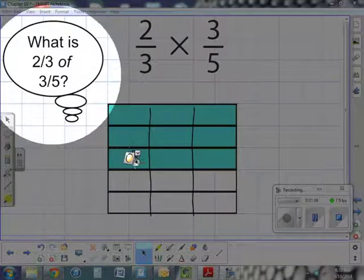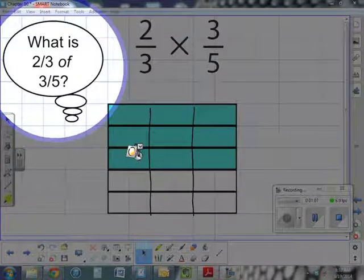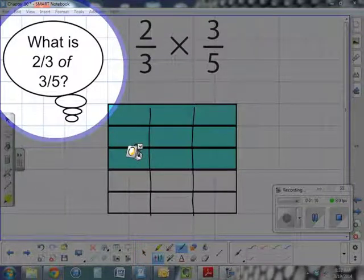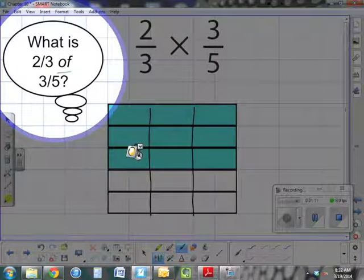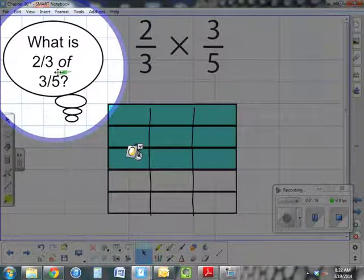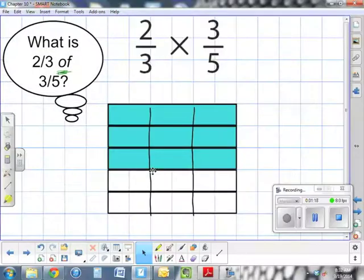Let's take a look at our fraction model. It went from being three-fifths to now having one, two, three, four, five, six, seven, eight, nine parts. So once again, what is two-thirds of three-fifths? We have nine parts. So what do those nine parts mean?